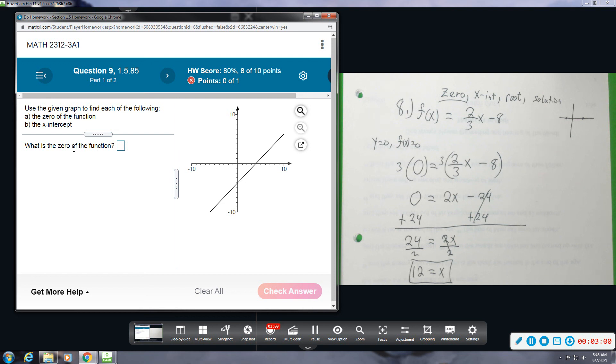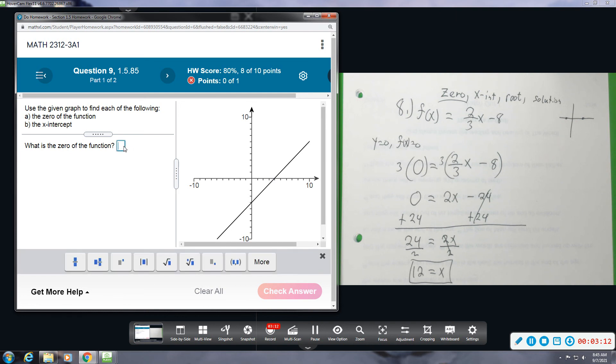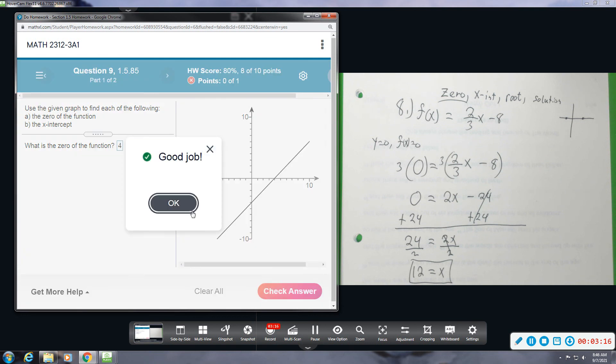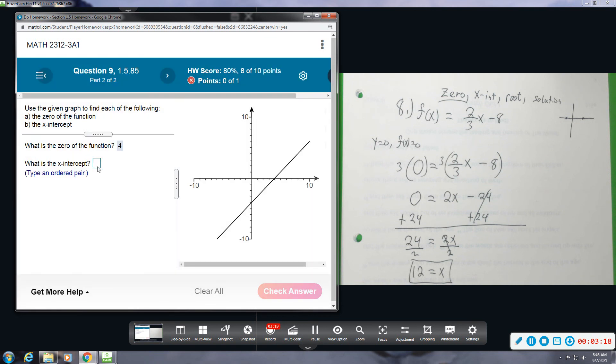If you look at this graph, you can see where it is crossing. This is zero, one, two, three - looks like it's crossing at four. So the zero is x equals four.